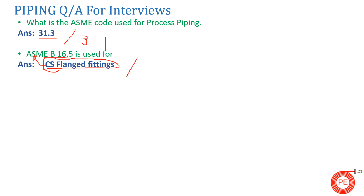If someone asks which standard to refer for cast iron flanges, the answer is ASME B16.1. ASME B16.5 is applicable up to DN600. If you have a flange greater than DN600, you refer to ASME B16.47, which is the flanges standard applicable for large diameter flanges.